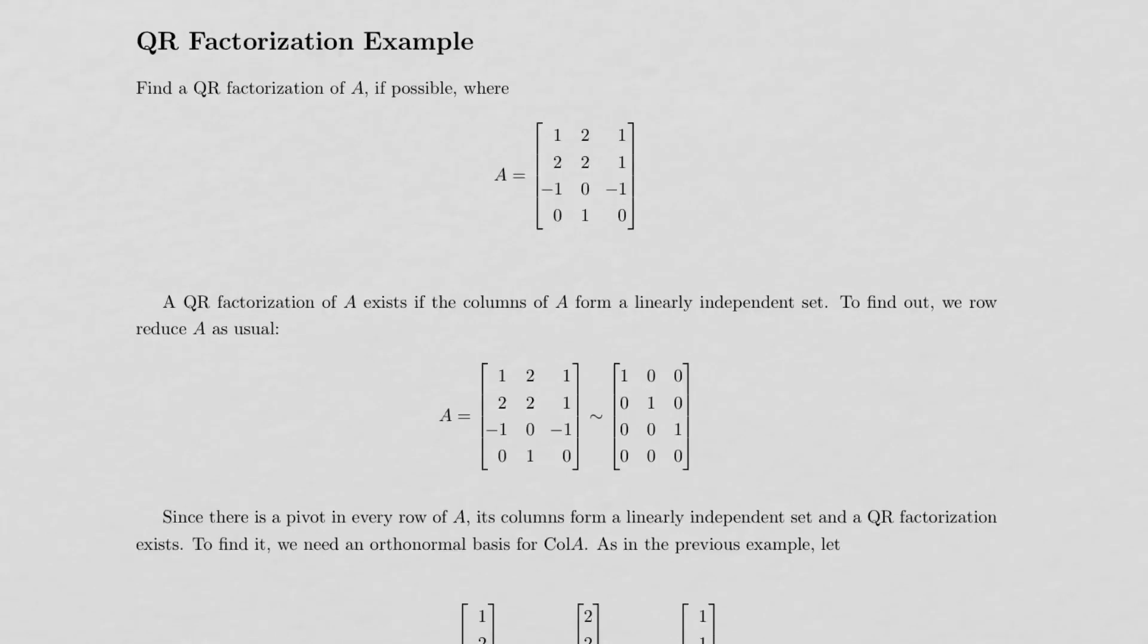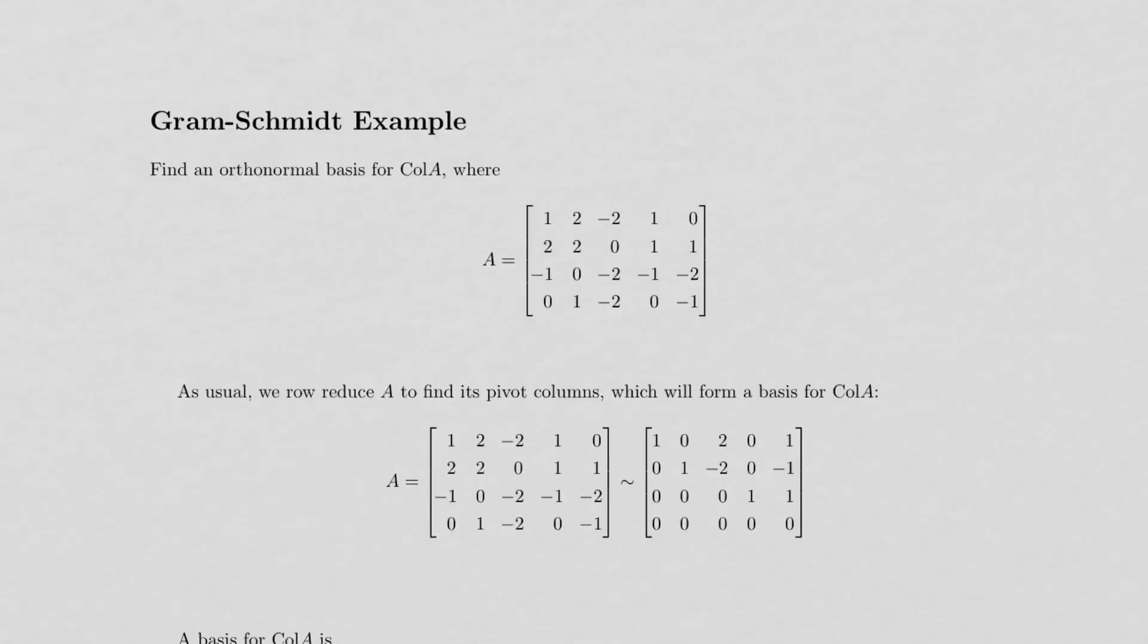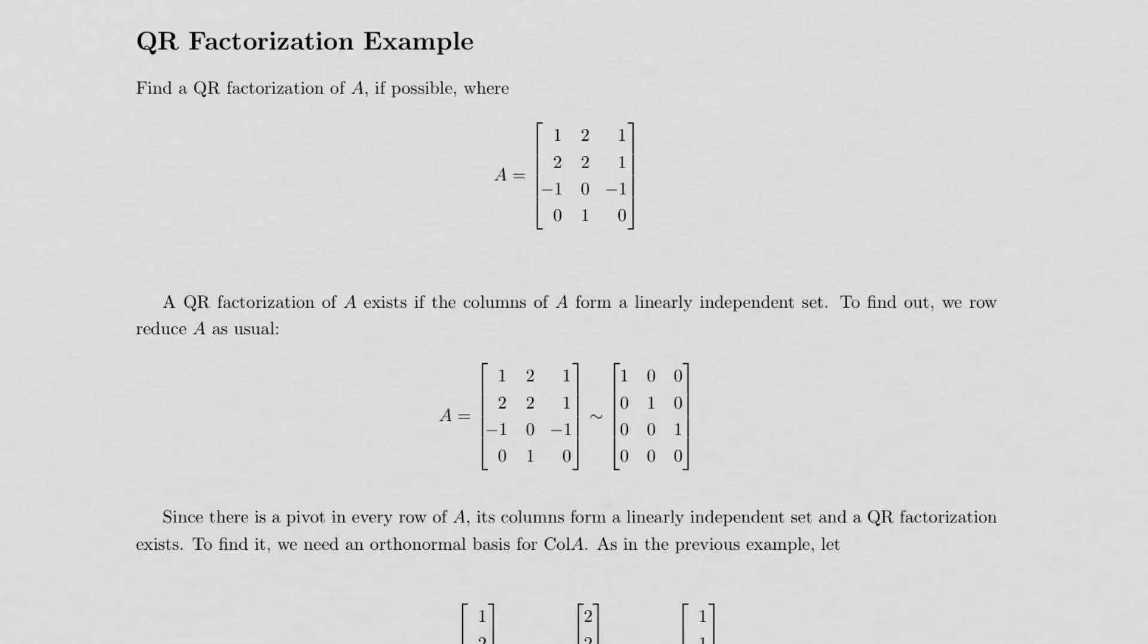Another example that we can do is to find a QR factorization of A. So here's the matrix A. It's not the same as the matrix in the first example, but you can see here that I've got columns 1, 2, and 4 included in the new matrix A, and I did not include columns 3 and 5. So here's my new matrix A.